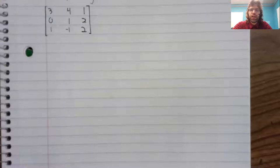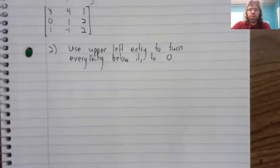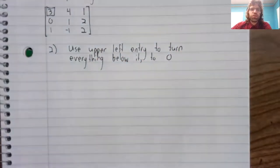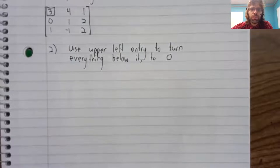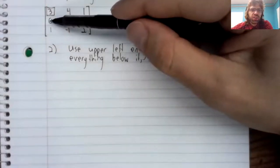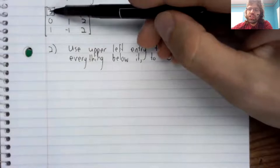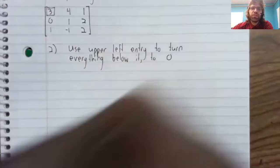And now we are going to use the upper left entry to turn everything below it to zero. We already have a zero here. Nothing needs to be done. But we'll use this three to turn this one into zero.